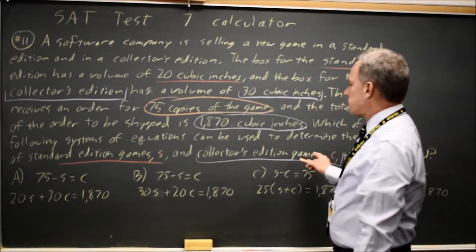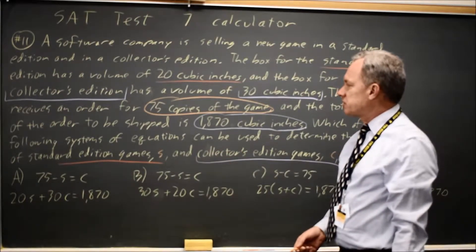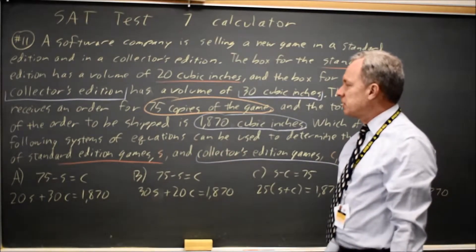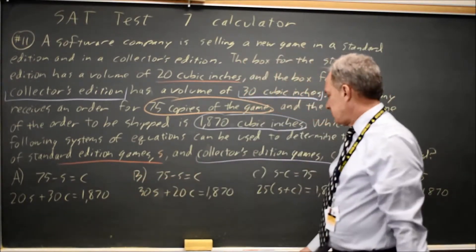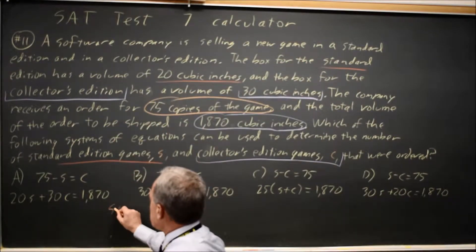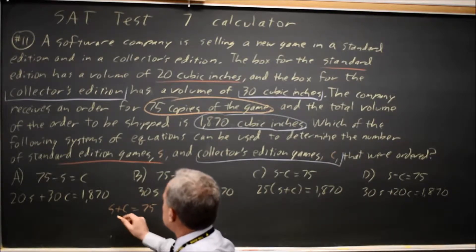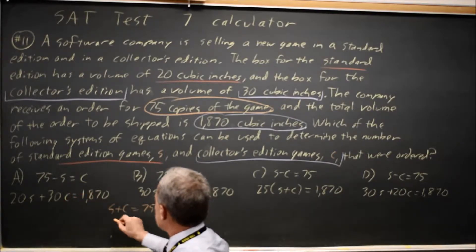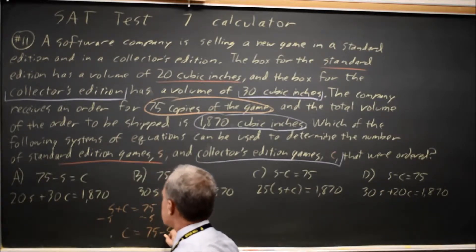If C is the number of collector's editions and S is the number of standard editions, the total number of copies should be S plus C equals 75, but they don't give you that form for any of these. If I look at S plus C equals 75, subtracting S from both sides gives me C equals 75 minus S,